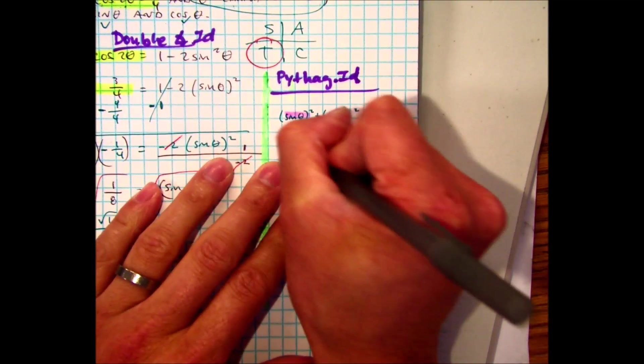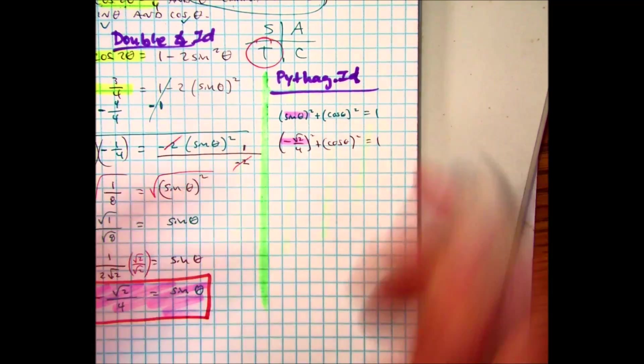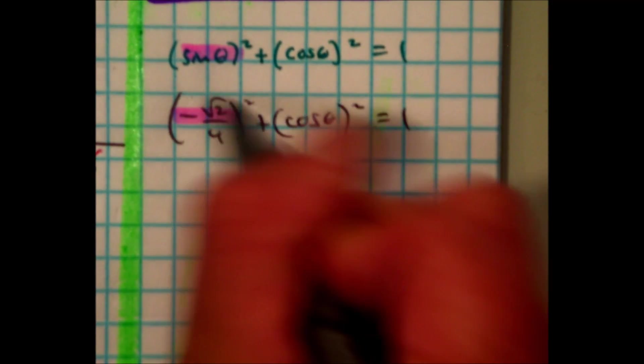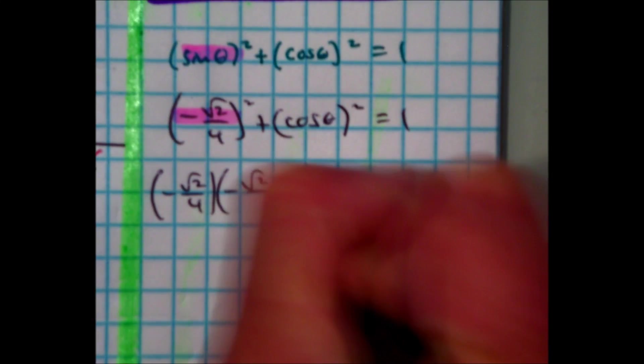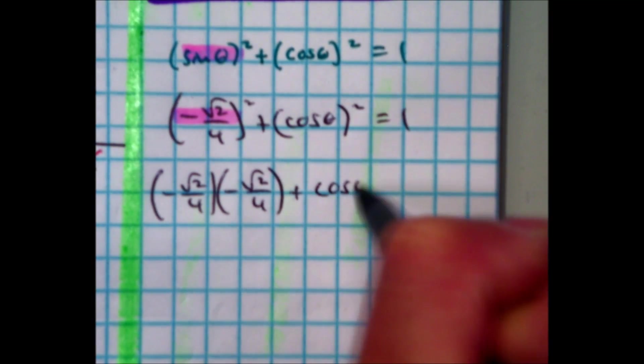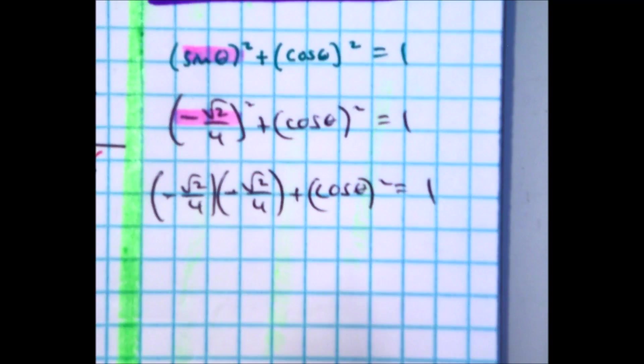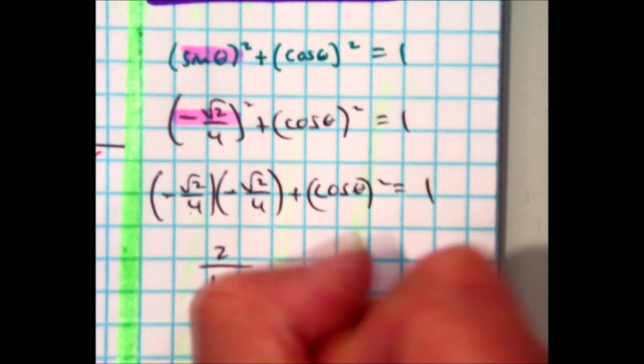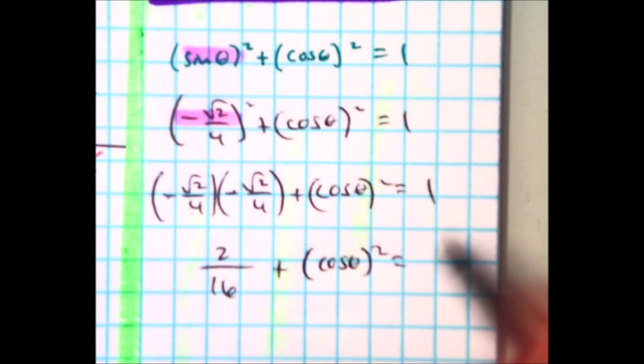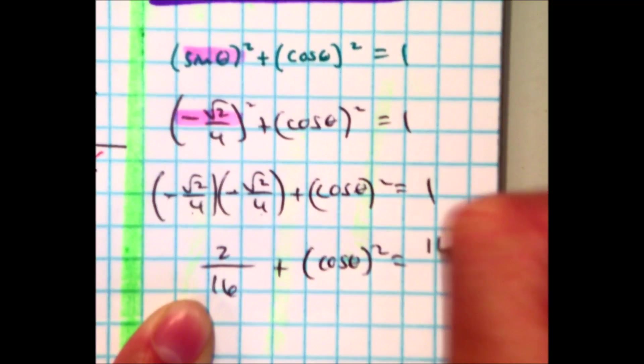So now I'm just going to do a substitution. So here I have negative radical 2 over 4 squared plus cosine theta squared equals 1. Remember, this means multiply it by itself. I just want to make sure we're on the same page. What's a negative times a negative? Radical 2 times radical 2. Radical 4 is 2. And 4 times 4 is 16. Plus cosine theta squared equals 1, which is going to be 16 over 16.